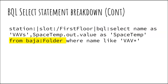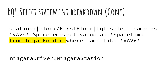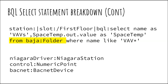Then we have what we call the predicate — this is really the first half of our predicate, where we start to filter down to the results we want. In this case, I'm using 'from Baja folder,' which tells it to ignore all components that aren't of type Baja folder. The same can be done for nearly any other type, such as niagara driver.NiagaraState, station, control:NumericPoint, and bacnet:BACnetDevice.